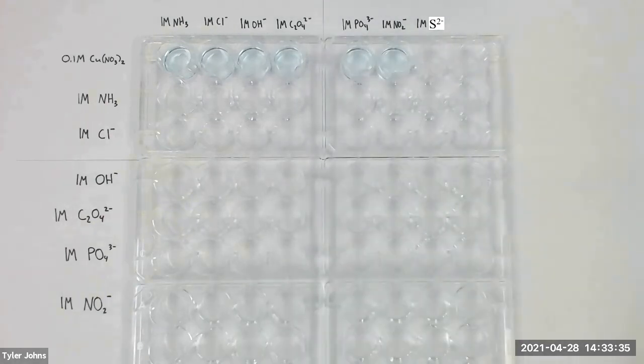We will next add one milliliter of one molar solutions containing the species listed at the top of each column. We will mix the reagents in each well and the contents of the top row of wells will serve as a reference during the rest of the experiment. For now, we will omit the sulfide ion and come back to it later.